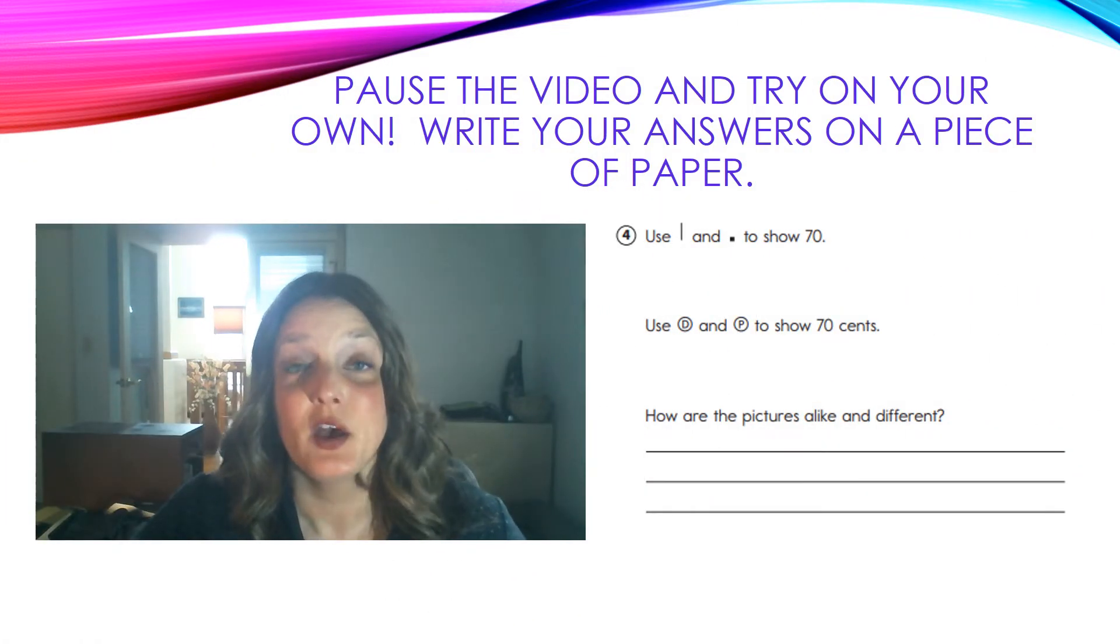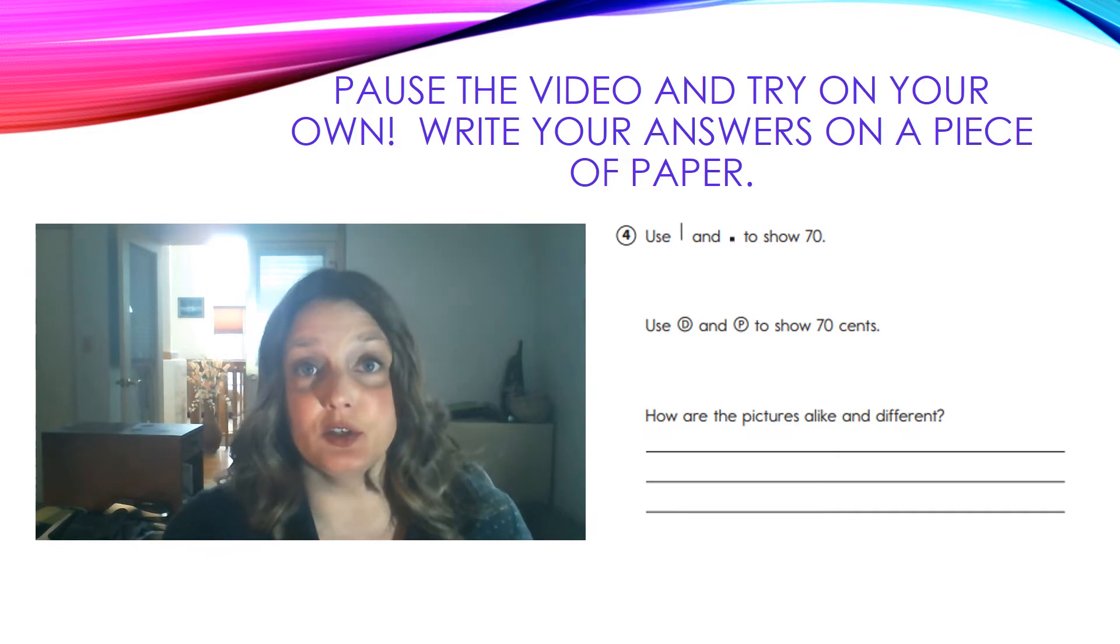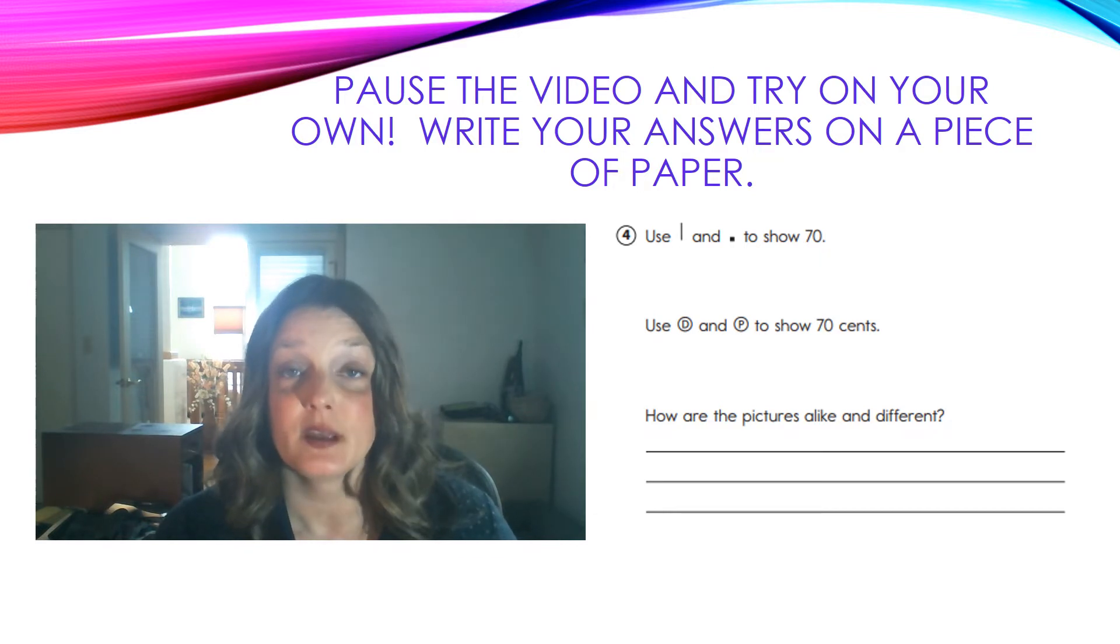Okay, for number 4, you're going to use tens and ones to show a number. In the first one, you're going to use straight lines and squares, or dots, to show your tens and ones. So, use tens and ones to show the number 70.